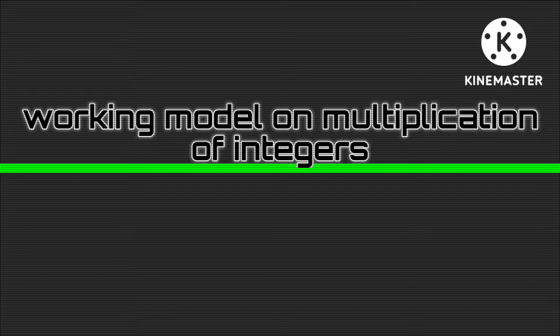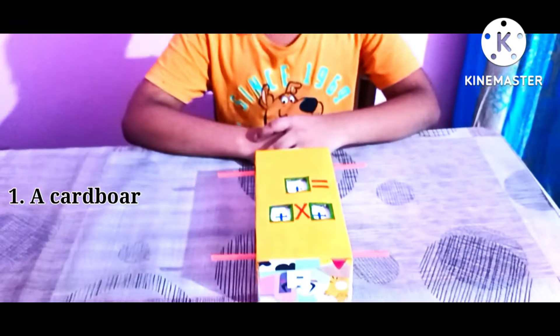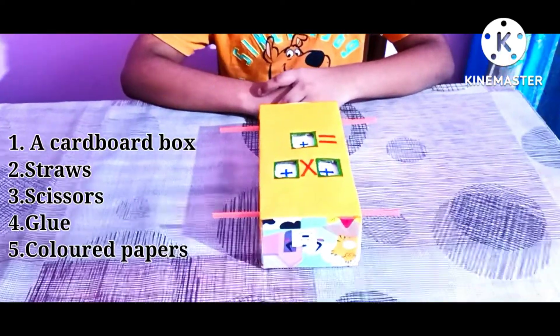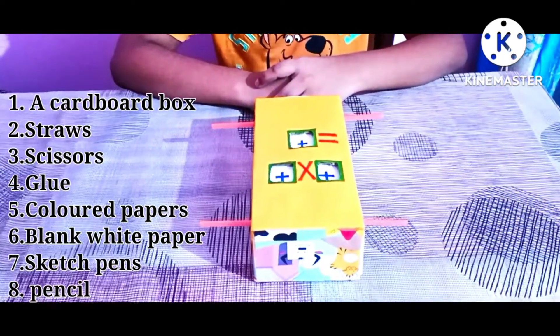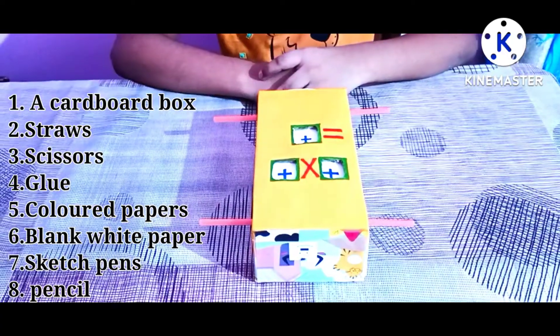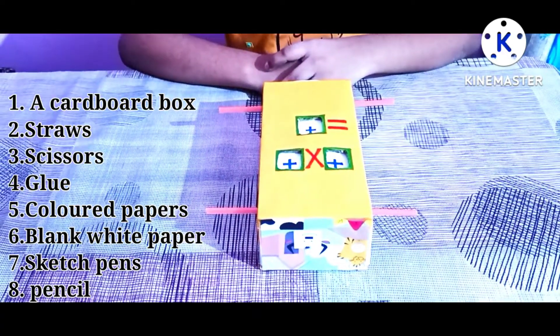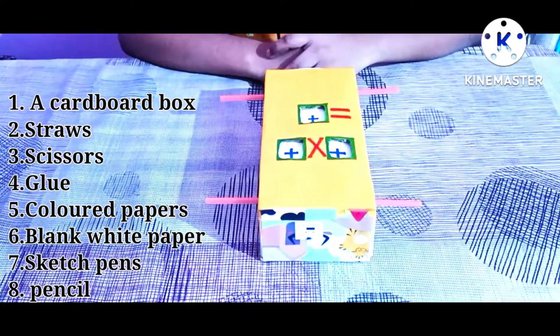So, to make our model, we need a cardboard box, straws, scissors, glue, colored paper, blank paper, sketch pens, and a pencil.